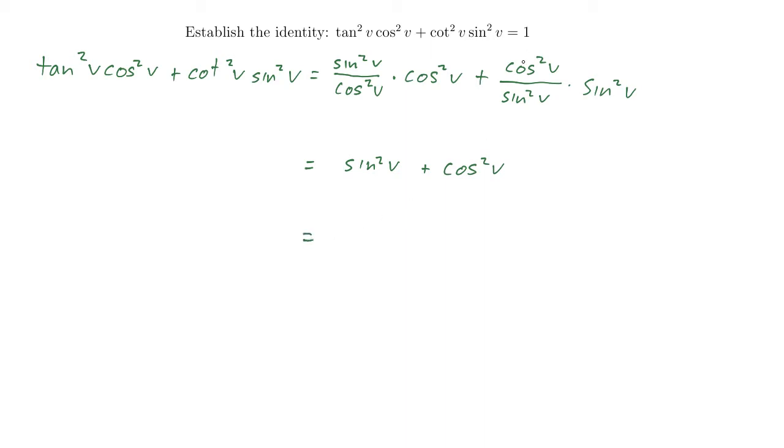And are we done? Well, not quite. We're not equal to one. But really, we are equal to one. Because sine squared v plus cosine squared v by the Pythagorean identity is, in fact, one. Checkmark. All right. So that turned out to be a very easy one. Let's look at one that's a little more challenging.